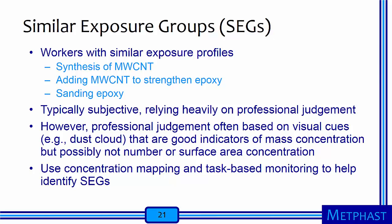This step is typically subjective and relies heavily on professional judgment. However, professional judgment is often based on visual cues, like a cloud of dust from a mechanical process. Such cues are good indicators of mass concentration but often not for number or surface area concentration. Therefore, concentration mapping and task-based monitoring can be used to help properly identify SEGs.